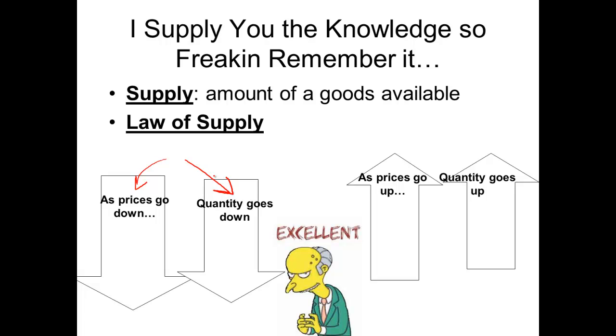Conversely, if the price of something goes up, the quantity supplied will also go up. So for instance, if the price of gas goes up to say $5 a gallon, you can bet your bottom dollar that the oil companies will find more ways to get more oil out of the ground to provide that to consumers. And that's exactly what we've seen.